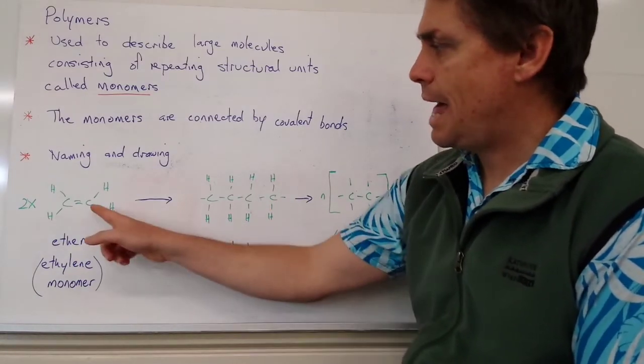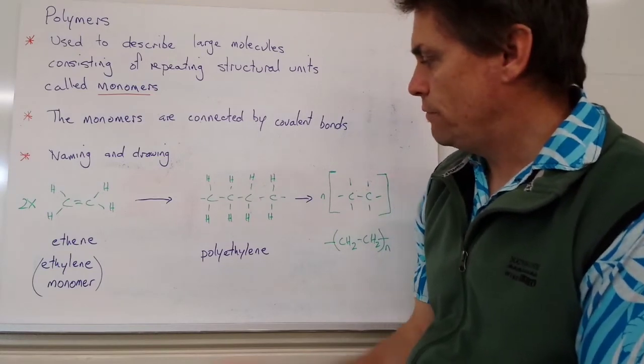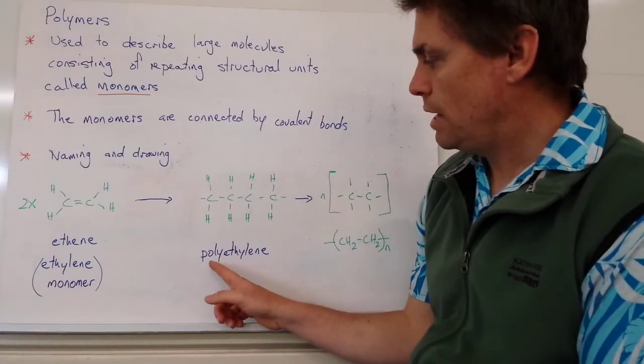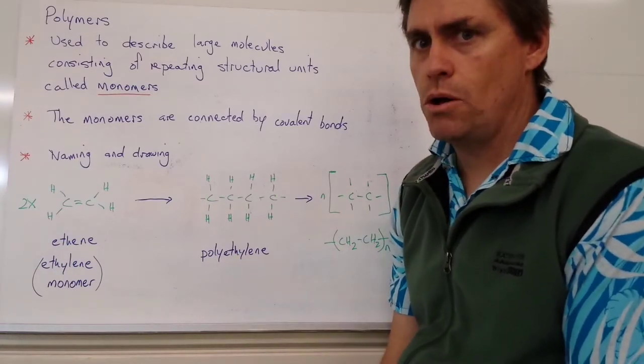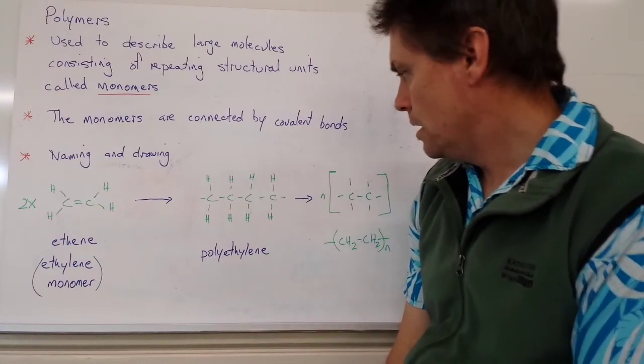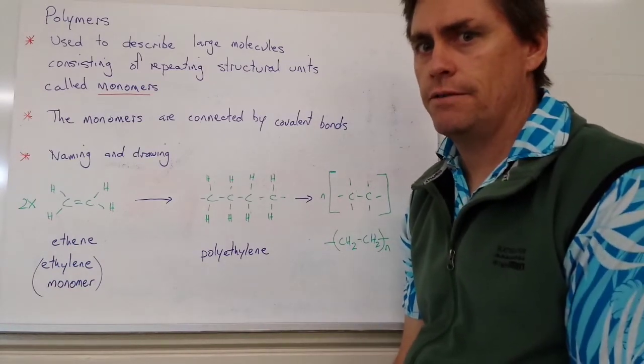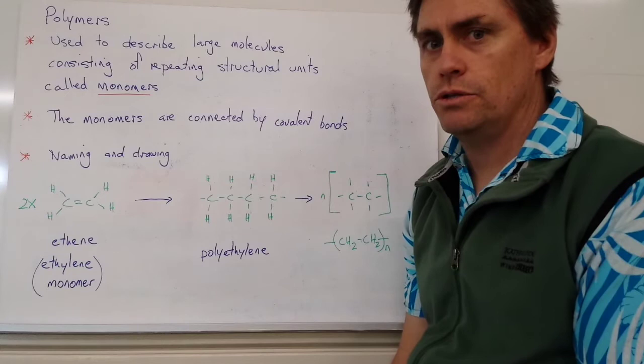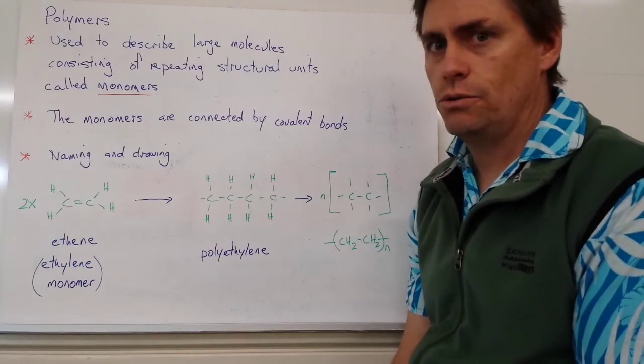Now we can keep adding ethene or ethylene units until we form a large multiple unit that we call polyethylene or polyethene. Because we don't want to draw a chain out that might have thousands of these monomer units joined together, we need some way to represent that in a shorthand notation.